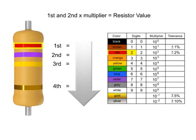The first band is red, so the first digit value is 2. The second band is violet, so digit 2 is 7.